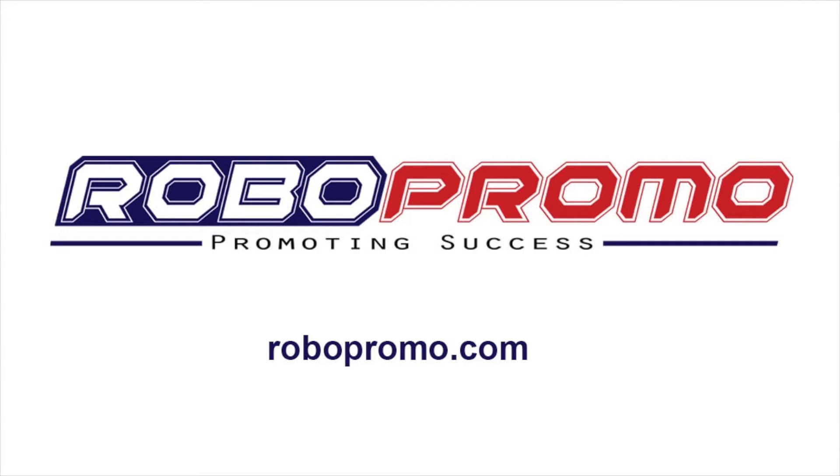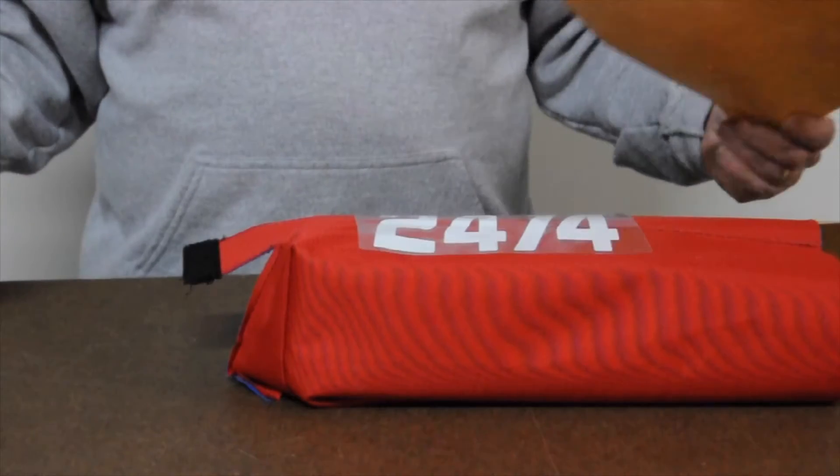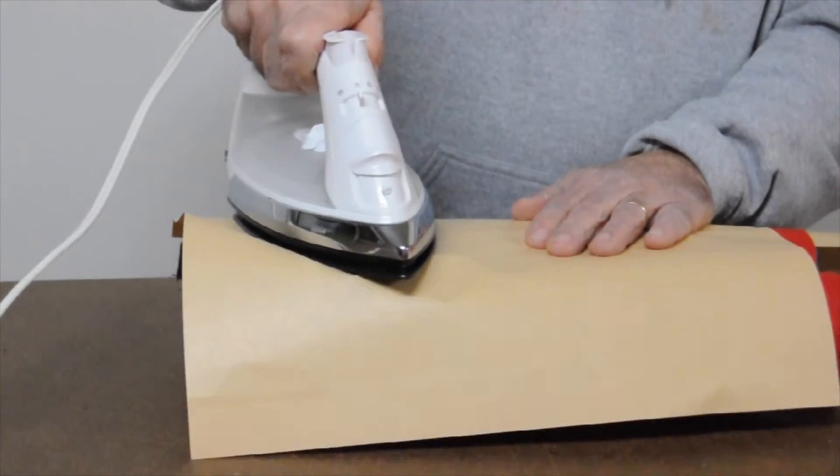This video demonstrates how to create an intake reversible bumper using RoboPromo's pre-sewn material. The first step in the process is to apply your team numbers to the material.